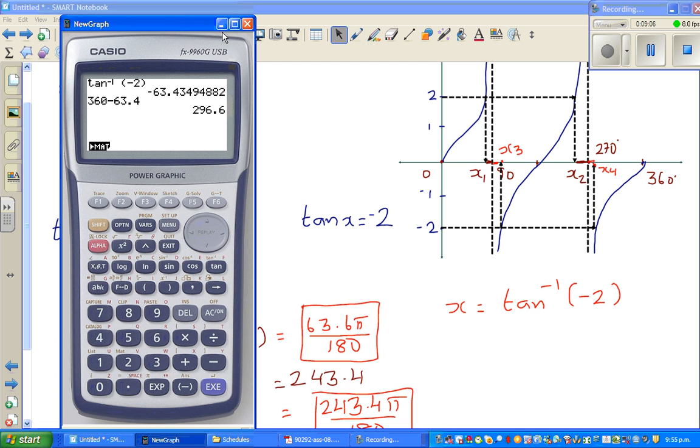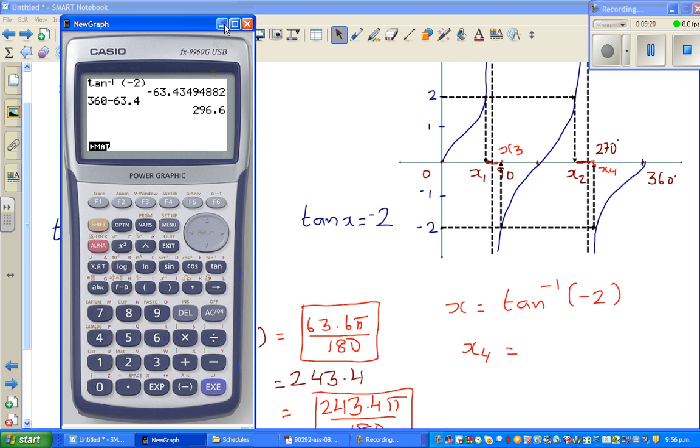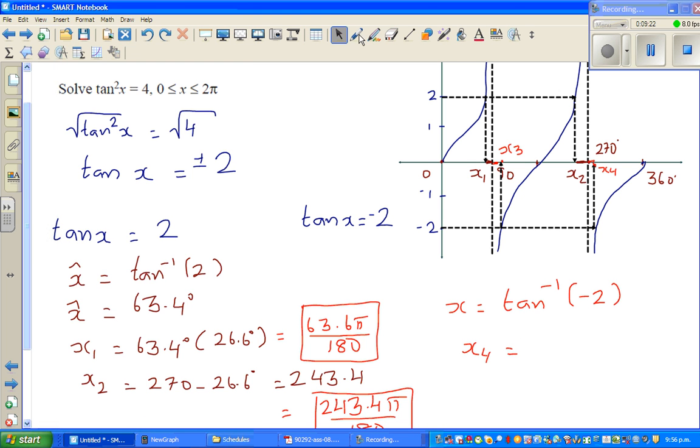One answer, x4 is 296.6 degrees. I hope I'm clear. So one angle is 296.6 degrees.